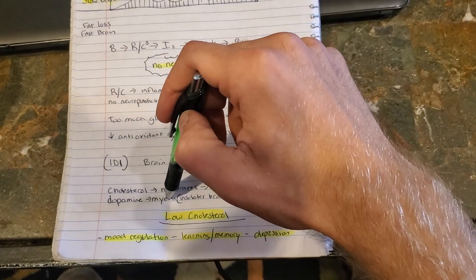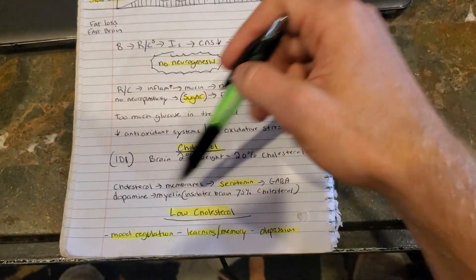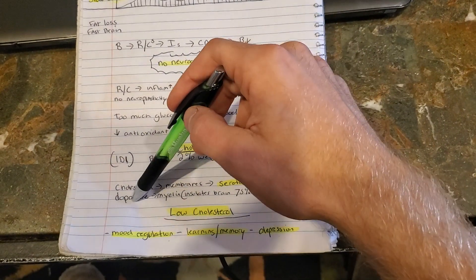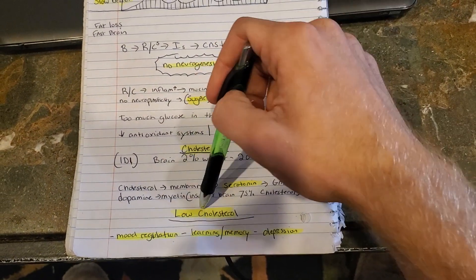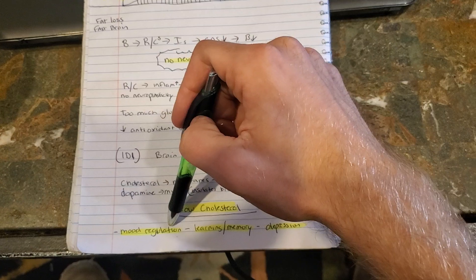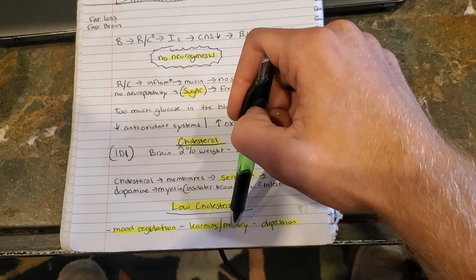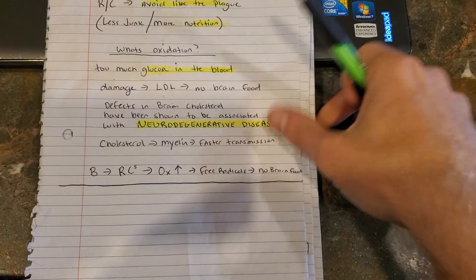So myelin sheaths help with communication with cells and speed them up. Dopamine, you know what that does. If you don't know what it does, go ahead and Google it. I'm not going to teach you everything. I'm going to stimulate your brain to learn. So low cholesterol in your body, it's affecting your mood regulation, your memory and learning, and it can also promote depression.